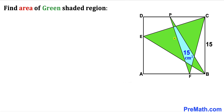Welcome to PreMath. In this video we have a green and blue shaded region fully confined in a square ABCD, such that the side length of this square is 15 — meaning this side is 15 and this side is 15 units as well. Moreover, the area of the blue shaded region is 15 centimeters square. Our task is to calculate the area of the green shaded region.